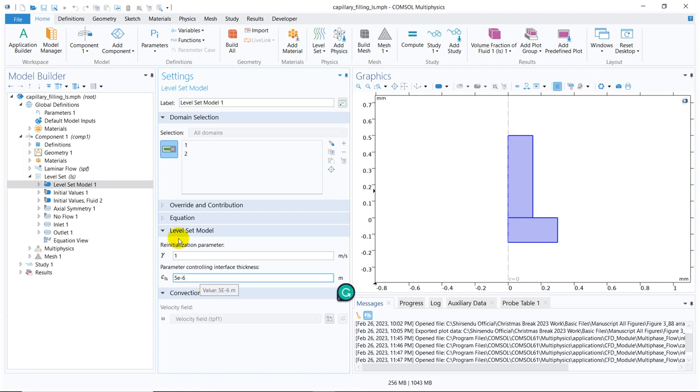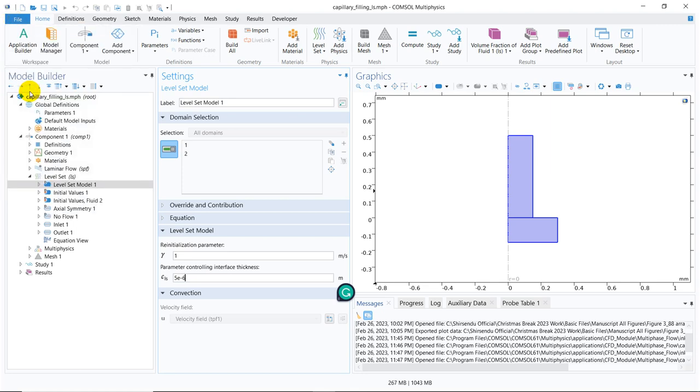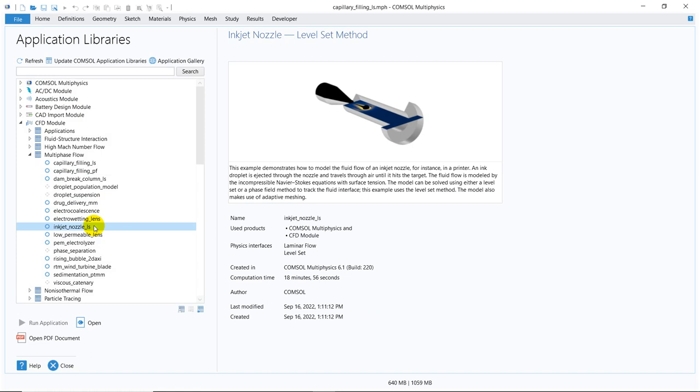So, let us now move to another file which is there in the application library. The one we will be choosing is this inkjet nozzle. Why am I choosing this one? Because capillary flow process, capillary rise process is a very slow process. Whereas, this inkjet printing, you can see when the liquid drops come out from a jet, the velocity is very high.